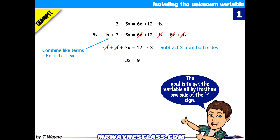So now it leaves me with 3x is equal to 9. To isolate the x — that's 3 times x — I'm going to divide both sides by 3. So 3x divided by 3 and 9 divided by 3. You can see on the left-hand side the 3s are going to go away. So x is equal to 9 divided by 3, which means x is equal to 3.